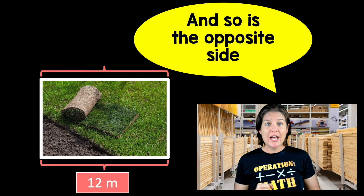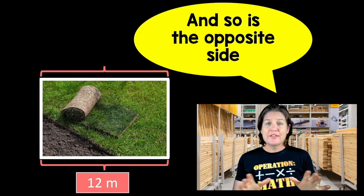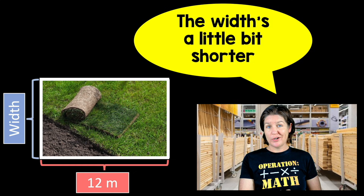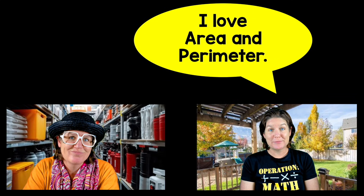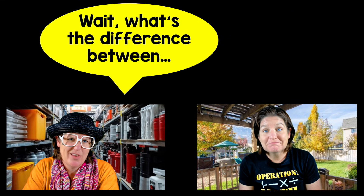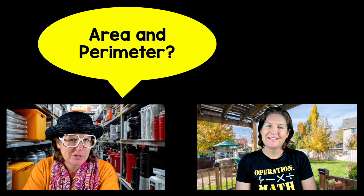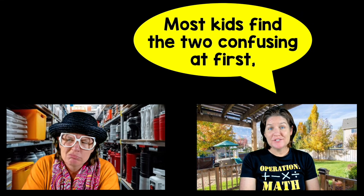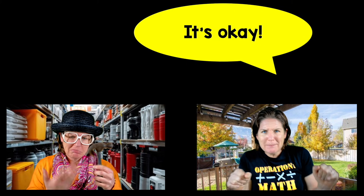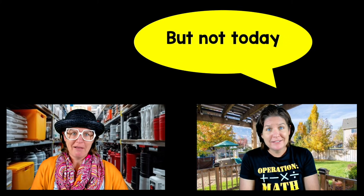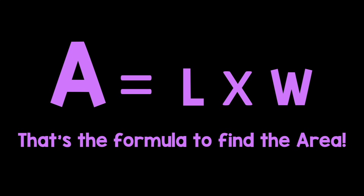The opposite side is 12 meters too, and the width's a little bit shorter — only six meters wide. I love area and perimeter! Wait, what's the difference between area and perimeter? Like I said, most kids find the two confusing at first — it's okay. But not today, because we know A equals L times W. That's the formula to find the area.